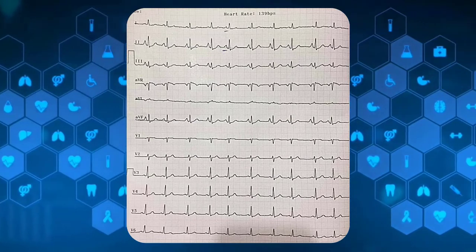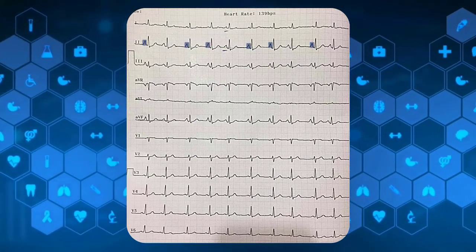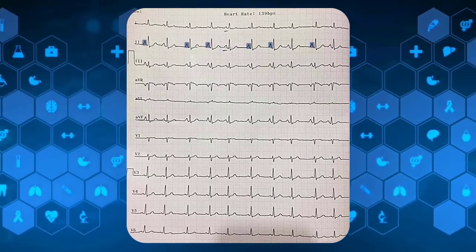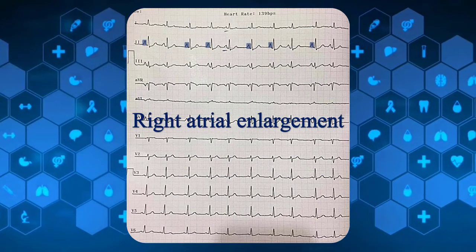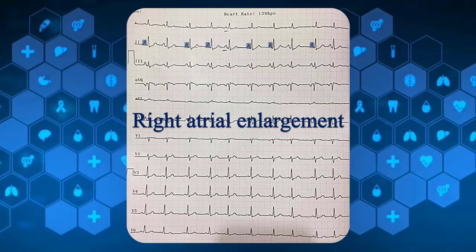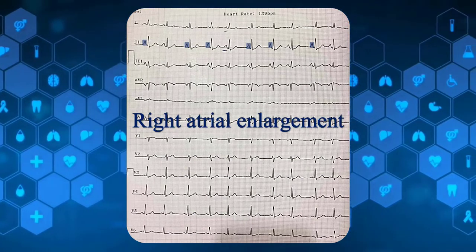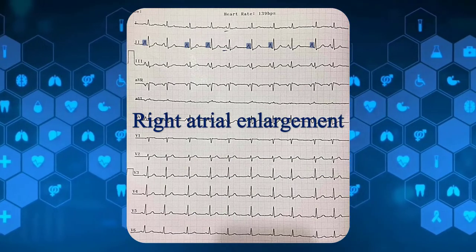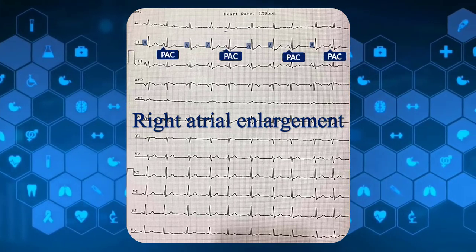Let's come back to our training strip. Here, P waves are obviously peaked and about 3 millimeters tall. Therefore, P pulmonale due to right atrial enlargement is present. The underlying irregularity is owing to PACs.